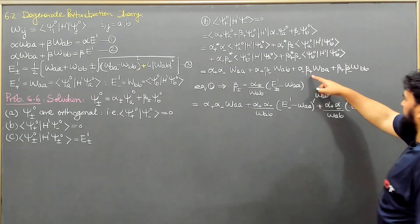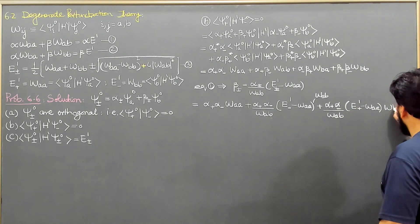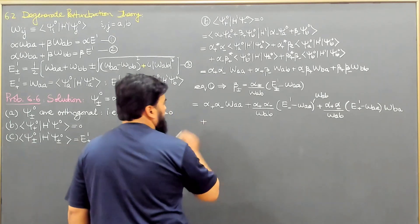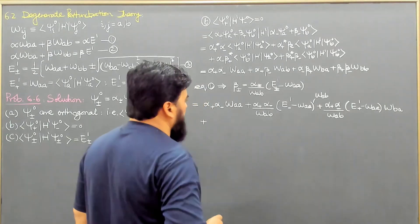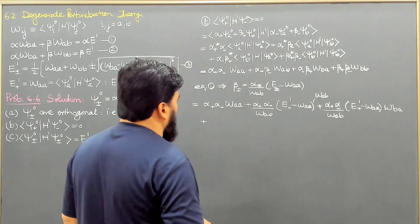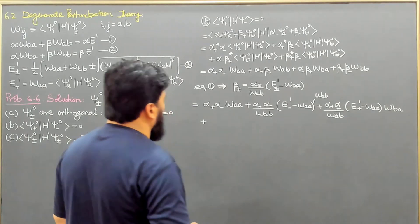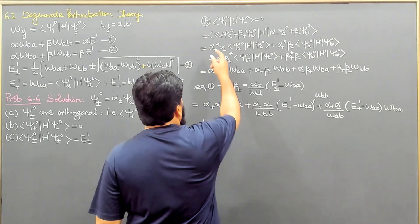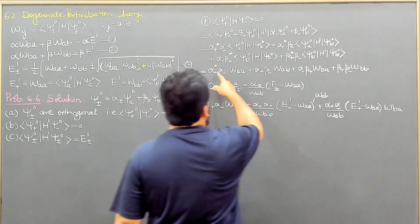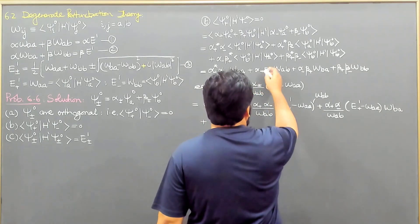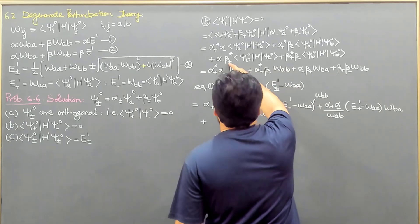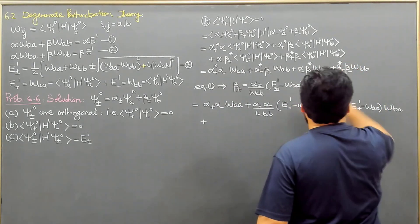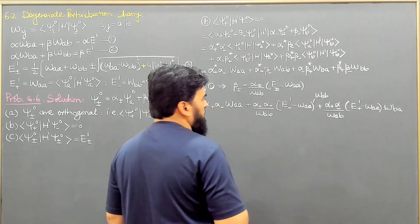When writing α⁻·β⁺·W_BA, the W_BA terms come in. For β⁺ in conjugate form: β⁺* = α⁺*·W_AB*/(E⁺₁ - W_AA). We note that W_AB conjugate becomes W_BA, so W_AB and W_BA cancel each other.